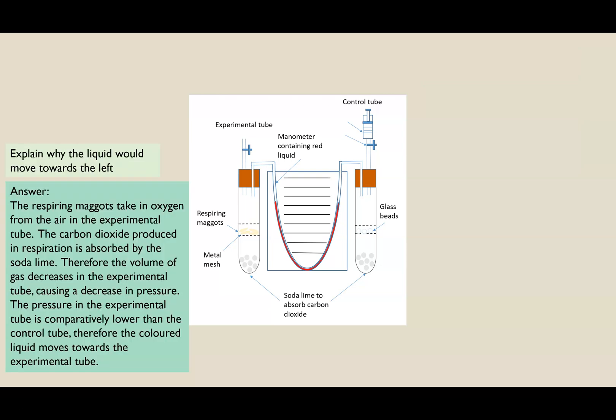The next one was explain why the liquid would move to the left. Now, sometimes they'll add in an extra question and they'll actually get you to work out which direction would the liquid move first. And it's not always set up the experimental tubes on the left. Sometimes it's on the right, but the liquid will always move towards the experimental tube. And the reason for that is the maggots are respiring. So they're going to be having more oxygen diffused across their surface for aerobic respiration. Carbon dioxide, which is produced, will be absorbed by the soda lime. So we'll end up with a decrease in volume in the experimental tube. That will cause a decrease in pressure. Comparatively, the control tube has a higher pressure now compared to this lower pressure in the experimental tube. Therefore, it's going to force that liquid, that coloured liquid around towards the experimental tube.